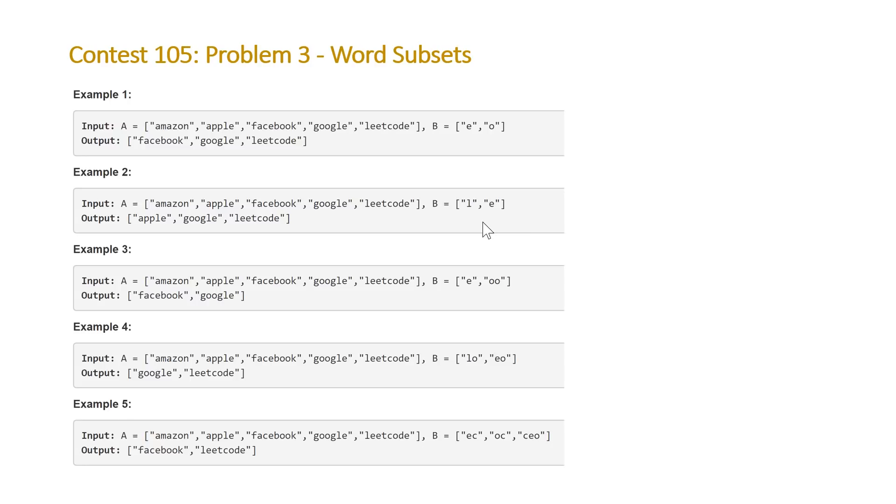And the second example is very similar. When we get to the third example, we have an actual string that is more than just a single character. And it's E and double O. So of course, Facebook and Google are going to be the only two words in our list A that have both of those substrings.